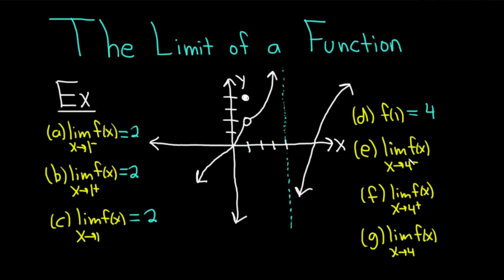Part e wants us to find the limit of f of x as x approaches 4 from the left. Coming from this direction, the graph is going down forever — the function approaches negative infinity. That's the answer for the left-hand limit. Approaching 4 from the right, the graph gets big forever, so it's positive infinity.